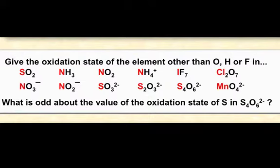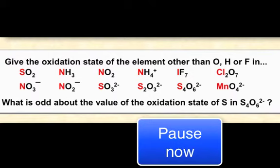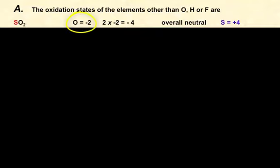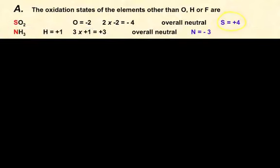Now work out the oxidation state of the element shown in red in these examples. SO2: oxygen is minus two, two oxygens give minus four, and since it's neutral overall, sulfur must be plus four. NH3: hydrogen is always plus one, three hydrogens give plus three, so for the molecule to be neutral, nitrogen must be minus three.